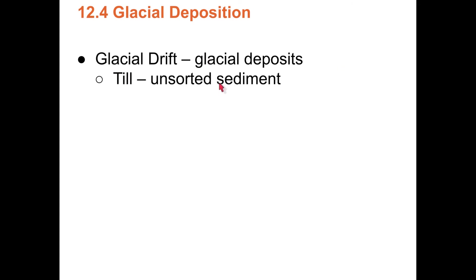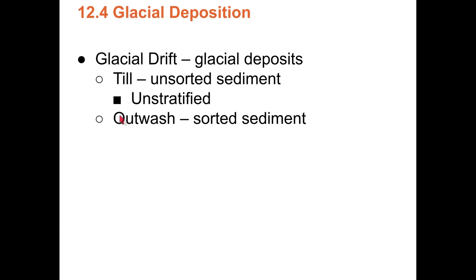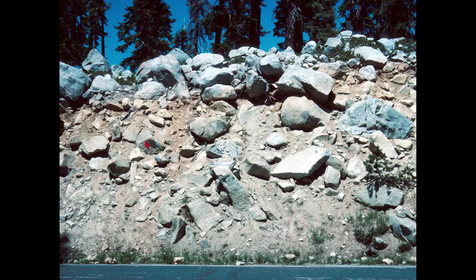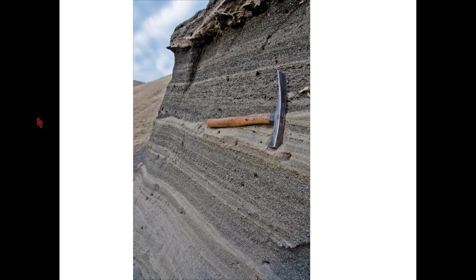Glacial till is unstratified, unsorted — large rocks, angular and blocky, mixed with powder, rock flour, sand, and silt. The outwash, by contrast, is sorted and stratified by stream flow or wind speed — larger material deposited by faster water, finer material by slower water, making layers. It's very obvious whether you're looking at moraine or outwash.